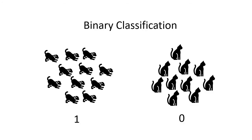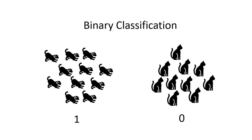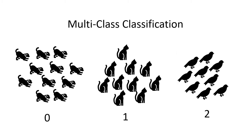A classification predictive modeling problem may have two class labels — the simplest type, referred to as a two-class or binary classification problem. Alternatively, the problem may have more than two classes, such as three, ten, or even hundreds of classes. These types are called multi-class classification problems.